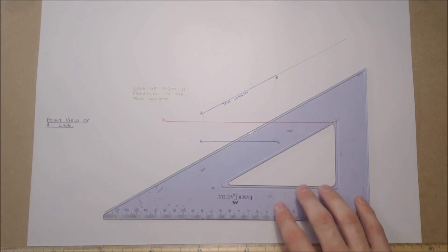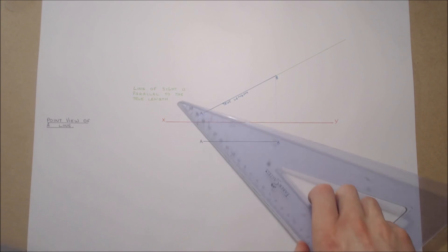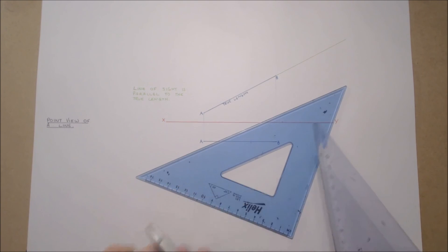Our line of sight is parallel to our true length, and our projection plane is perpendicular to our line of sight.